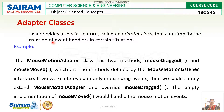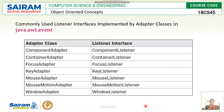I hope the mouse event and key event are understandable. Now we move to the next important concept: Adapter Classes. Java provides a special feature called adapter classes that simplify the creation of event handlers in particular situations. For example, MouseMotionAdapter is one adapter class that has two methods: mouseDragged and mouseMoved. It exactly defines the concept of MouseMotionListener and performs major operations of that listener.